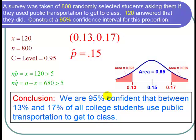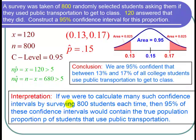Let's also understand what this 95% means. That's a probability. So let's find out what this 95% probability represents. If we were to calculate many such confidence intervals by surveying 800 students each time, then we would get each time a different confidence interval for each study. 95% of these confidence intervals would contain the true population proportion p of students that use public transportation. And I'm done with the problem.